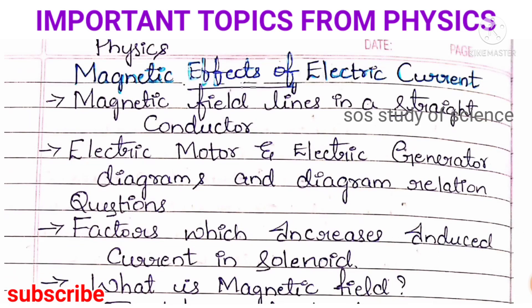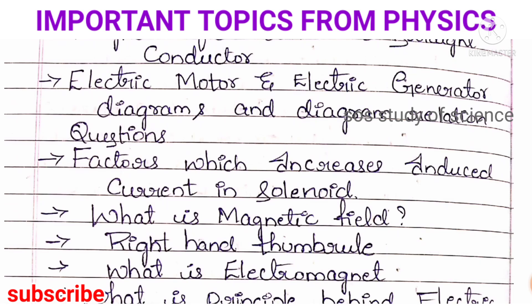Next, we focus on the last lesson: Magnetic Effects of Electric Current. This particular lesson is very easy because direct questions are being asked. The important concepts are: magnetic field lines in a straight conductor, electric motor and electric generator diagrams — compulsorily, one diagram will be asked. You have to learn the relation between electric motor and electric generator on the basis of diagrams. Also learn the factors which increase the induced current in the solenoid.